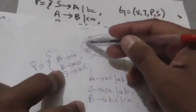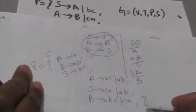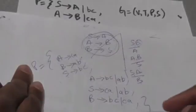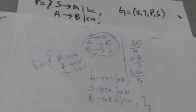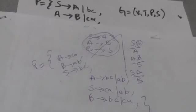After adding all these productions and removing all the unit productions from set P, the resulting grammar G no longer contains any unit productions. In this way we can eliminate unit productions from a grammar G which is without empty productions. Thank you very much.